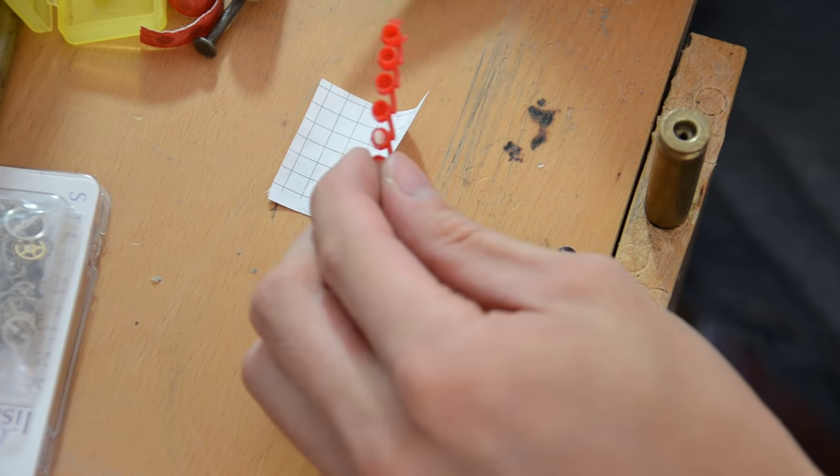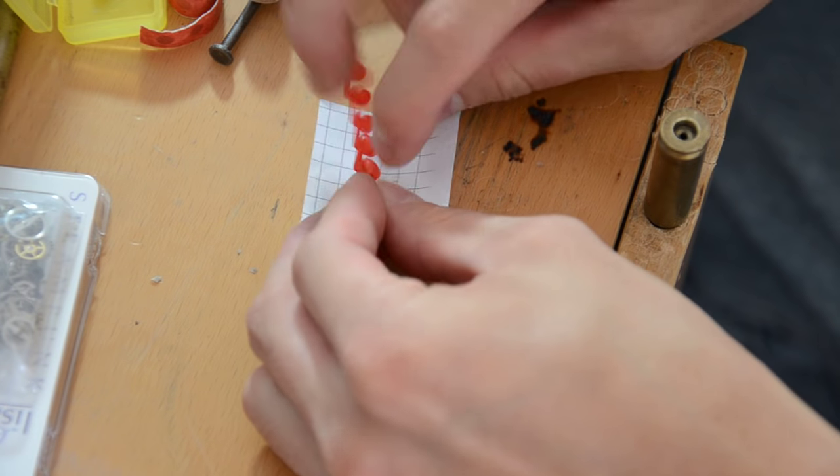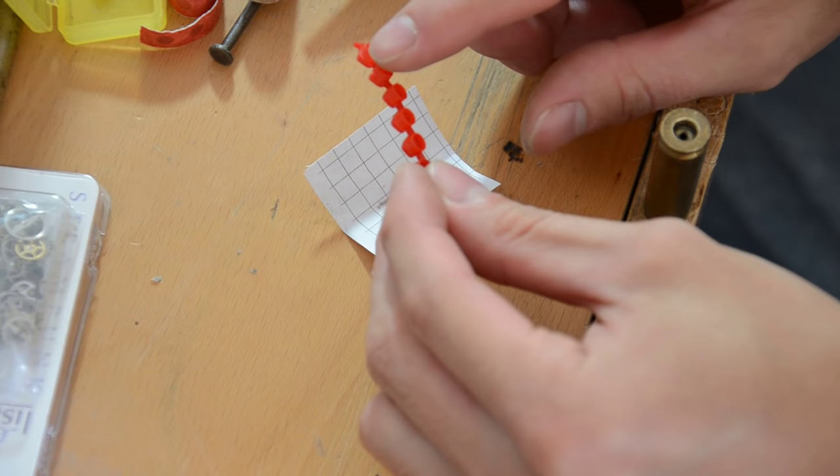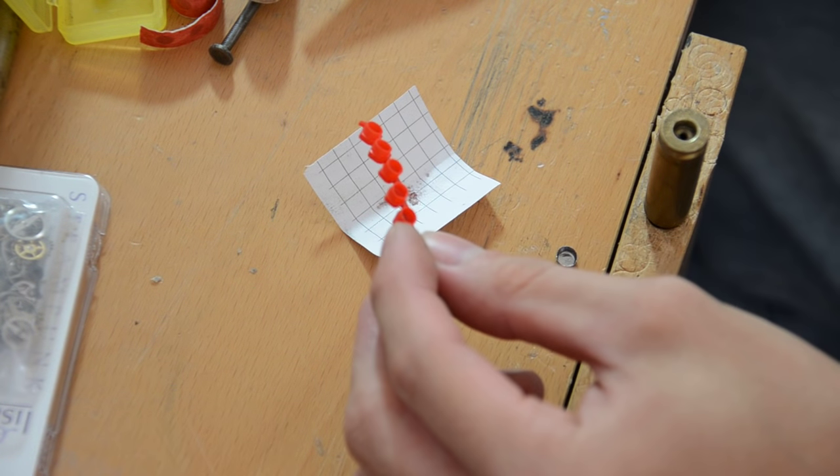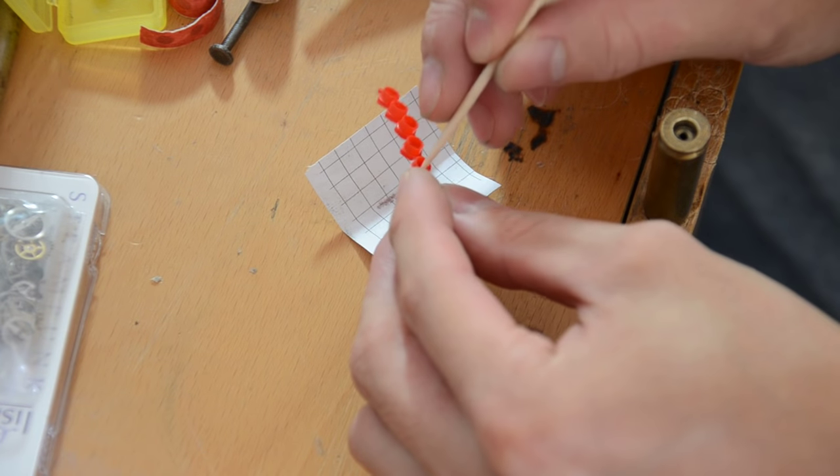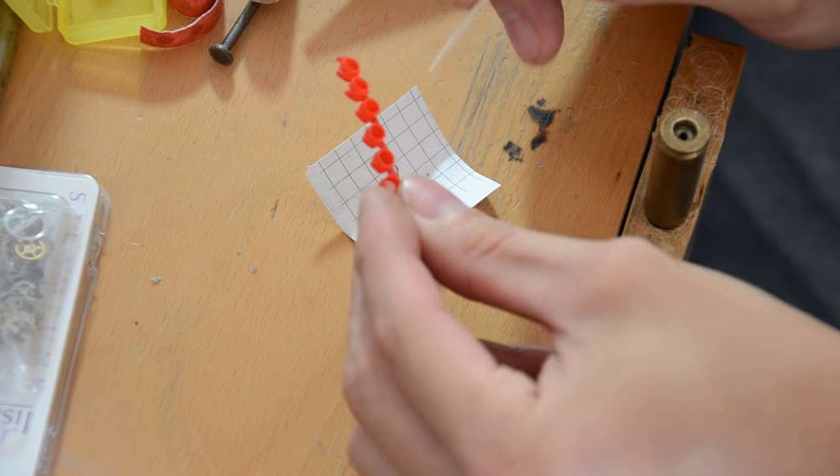And just squeeze it with the pliers, get the paper out. And just tap it out. Tap all the crap out. And you want to be gentle with her. She's very sensitive and tends to go off on you if you mistreat her.